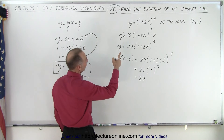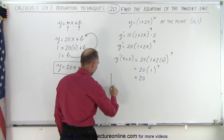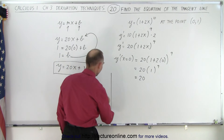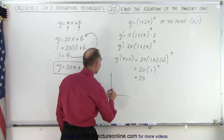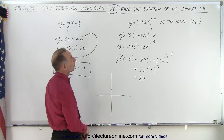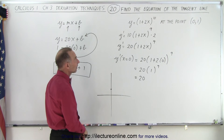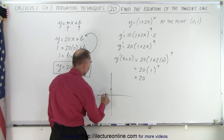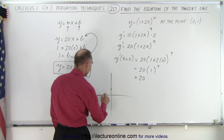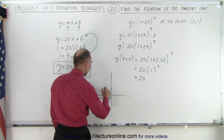When x equals 0, y equals 1 to the 10th power, which is 1. So when x equals 0, y is 1 — we have a point right there. When x equals negative 1, we get negative 1 times 1, that's negative 1 raised to the 10th power, which is positive 1. So when x equals negative 1, we get the same y value.